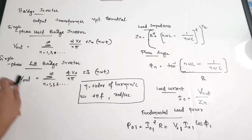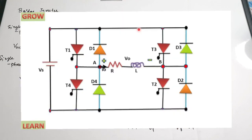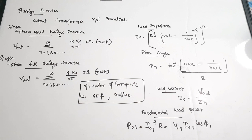You can now see the image of the single-phase full bridge inverter on screen. We have seen the diagrams and equations for both single-phase half bridge and single-phase full bridge inverters — the two main classifications of bridge inverters, which have the advantage of not requiring a transformer.